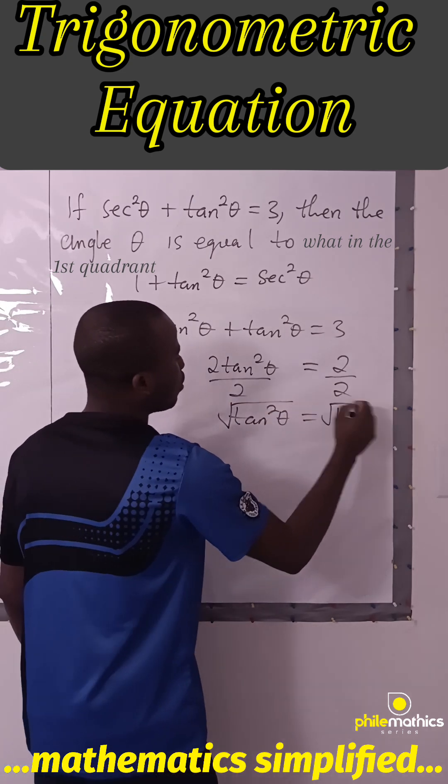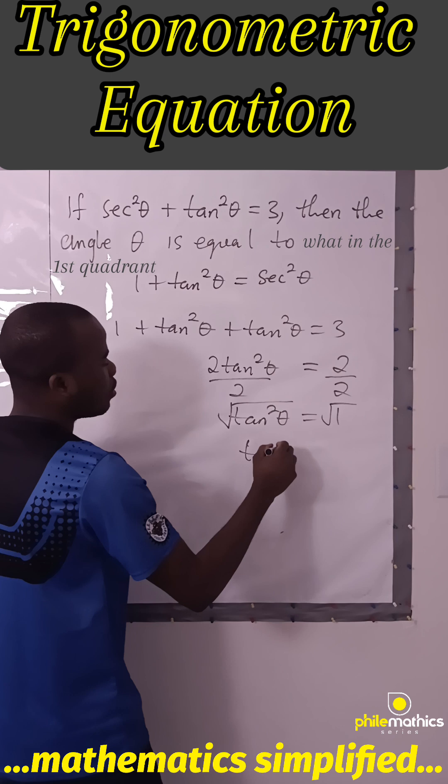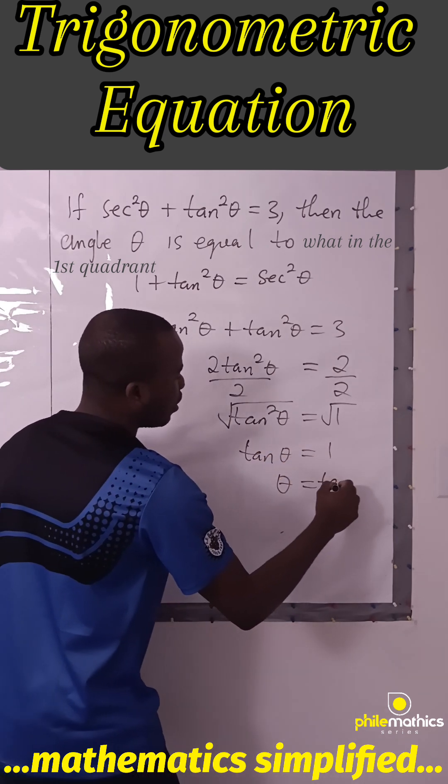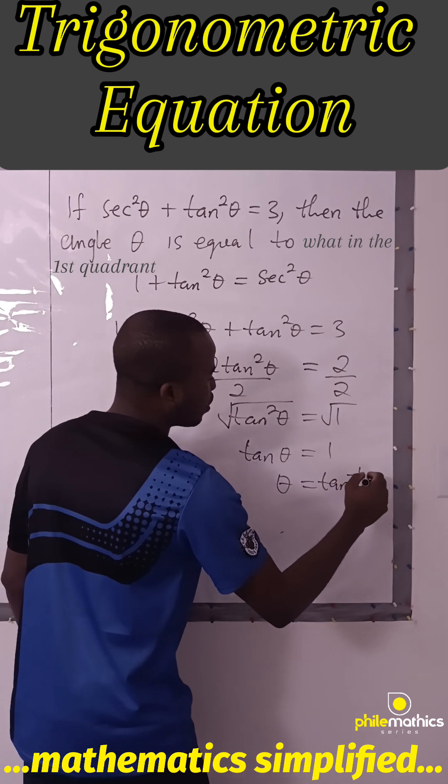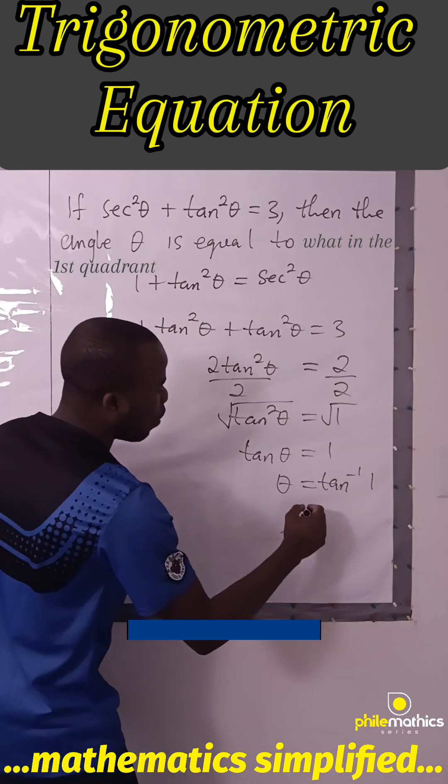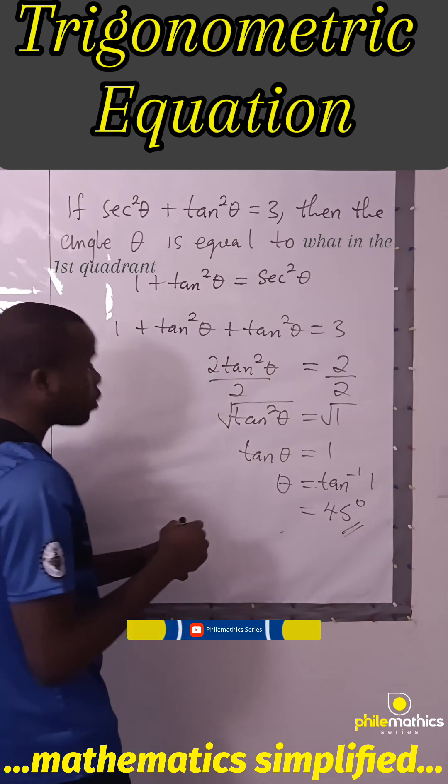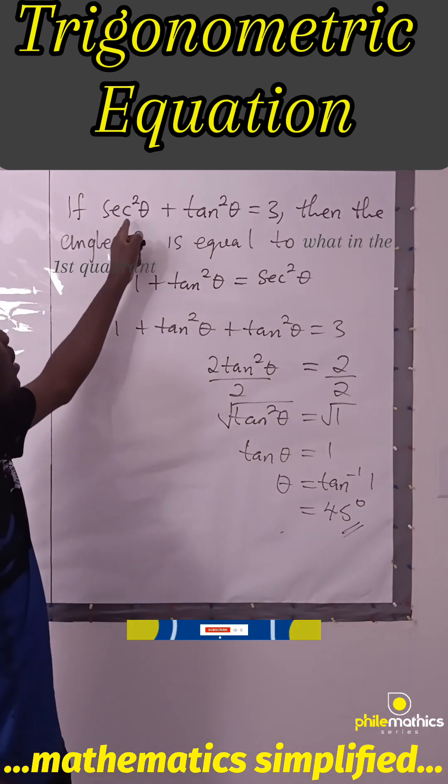To find θ, we'll take the arctan of both sides. Arctan of 1 is 45°, so 45° is the angle that ensures sec²θ + tan²θ equals 3. Thank you for watching.